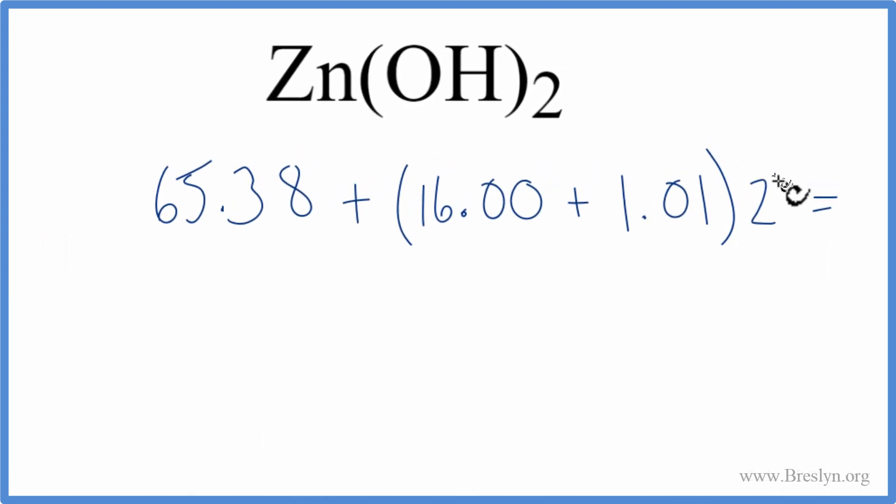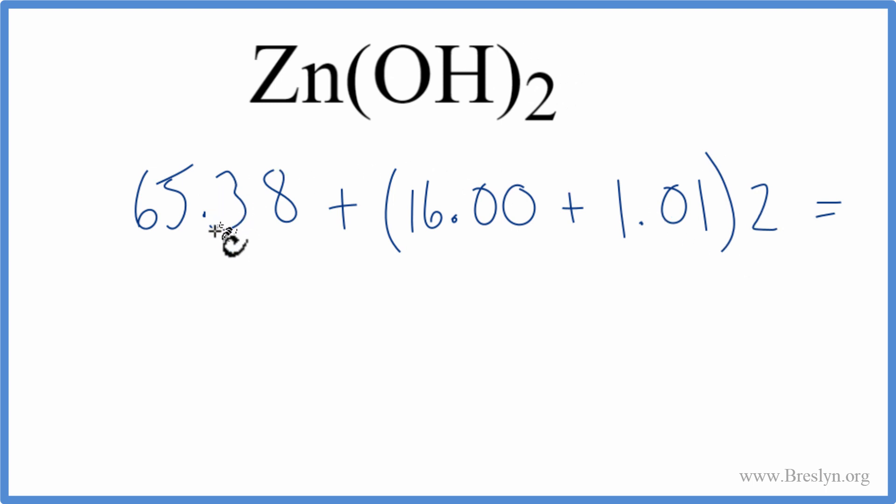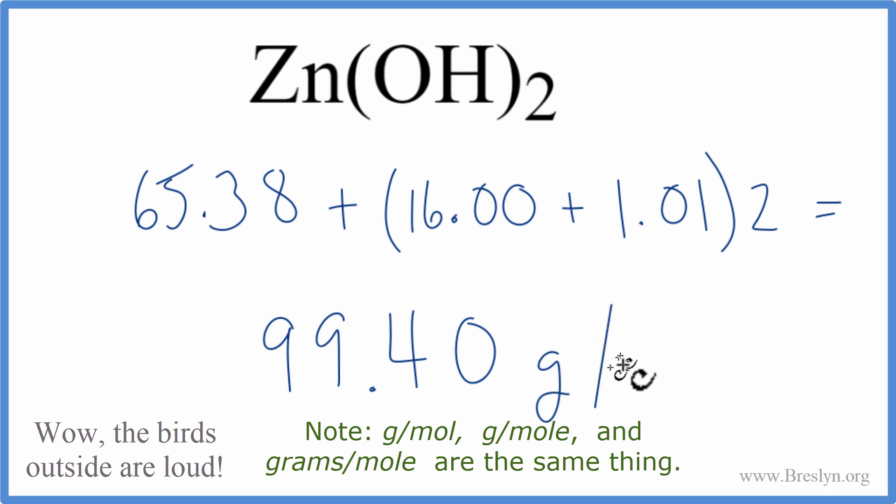So we add these up, multiply by 2, then we add it to this 65.38 and we end up with 99.40 and then we add grams per mole.